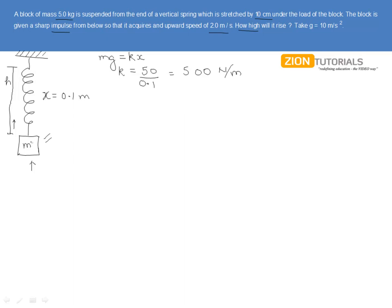Now we need to find the height, so we can apply energy conservation for this spring-block system because we have assumed these springs to be ideal. That means there is no loss, so let us employ energy conservation just after the impulse has been provided and at the moment this block reaches the height h.